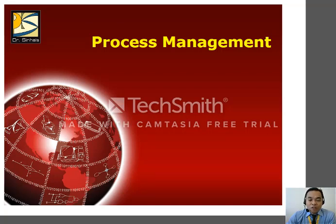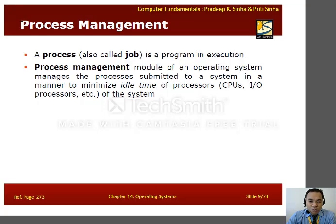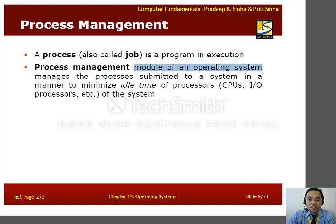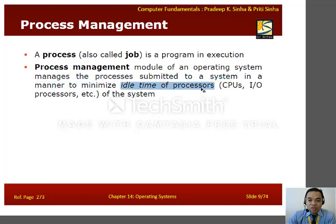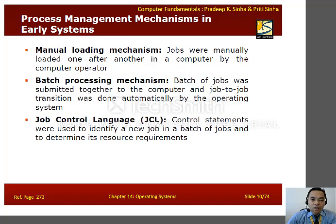Let's proceed to process management, the first function of an OS. A process, also known as a job, is a program in execution. Process management is a module of an operating system that manages the processes submitted to the system in a manner that minimizes idle time of the processors. In early systems we had manual loading, where jobs were manually loaded one after another by the computer operator. Then computing evolved into batch processing, where a batch of jobs was submitted together to the computer and job-to-job transition was done automatically by the operating system.